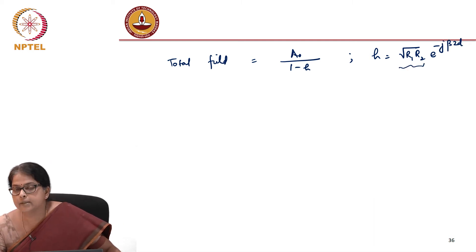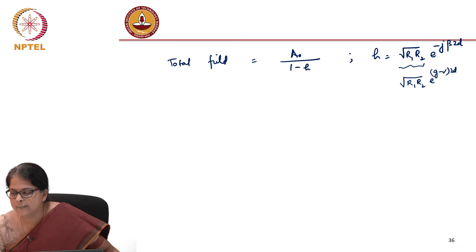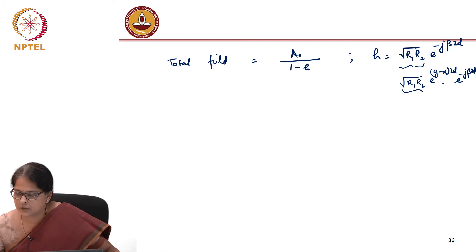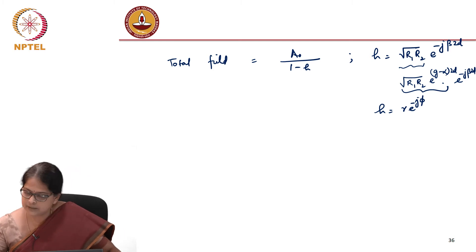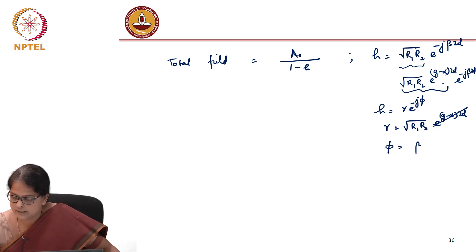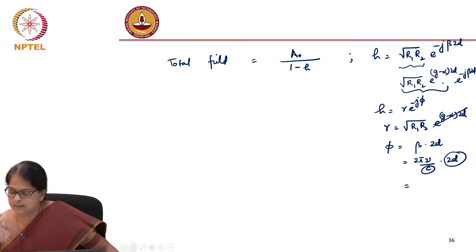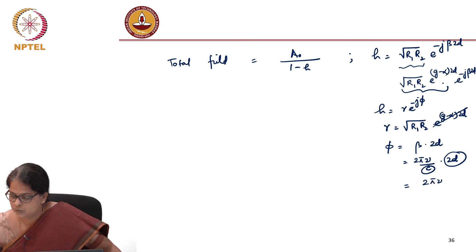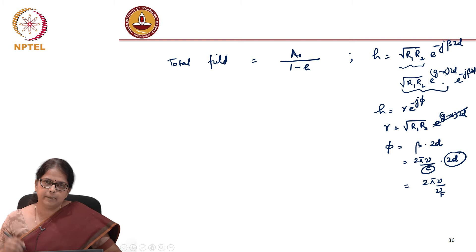If there is a gain medium, instead of just √(R₁R₂), we have √(R₁R₂)·e^((g−α)·2d)·e^(−jβ·2d). In general h is a complex number, so we write h = r·e^(−jφ), where r = √(R₁R₂)·e^((g−α)·2d) in a gain medium (or just √(R₁R₂) for a cold cavity), and φ = β·2d = 2πν/(c/2d) = 2πν/ν_FSR, since c/2d is the FSR.